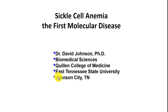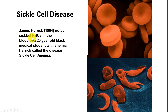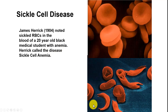This is David Johnson with a video on sickle cell anemia, the first molecular disease. You can see normal red blood cells on the right at the top, and sickle red blood cells below. Dr. James Herrick found this in 1904 when he noted that the red blood cells of a 20-year-old Black medical student with anemia were sickled. He named it sickle cell anemia, and we still use that name today.